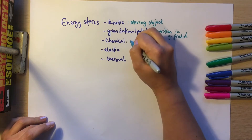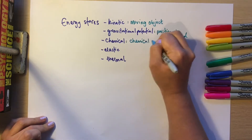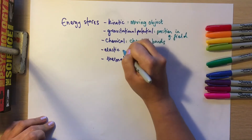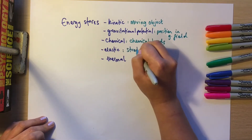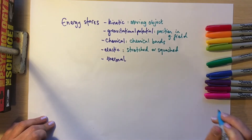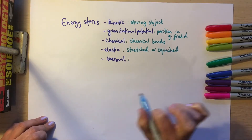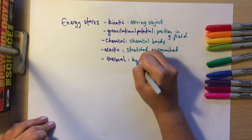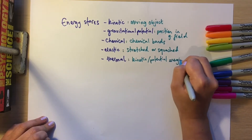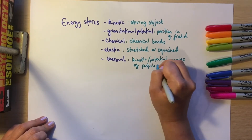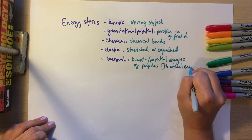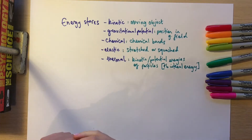Chemical energy is stored in the chemical bonds, so if there is a change in those chemical bonds, then there's going to be a transfer of chemical energy. Elastic potential energy is something that is stretched or squashed — if something is stretched or squashed, we have elastic potential energy. Thermal energy links to internal energy, which is the kinetic and potential energies of the particles.